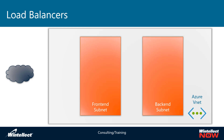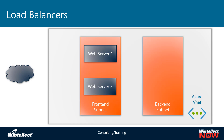Each one of these subnets is going to contain a component of the actual application that you're trying to serve up. So in the case of this two-tiered application, my front-end subnet would naturally contain my web servers. In this case, I have two web servers configured in a highly available scenario, and basically what they're doing is serving up the same content. If a request comes into web server one, it's going to serve up the same content as if the request was going to web server two. In the event that one of these web servers goes down, I can route all the traffic to a single web server and my application continues to function.